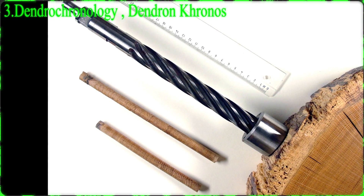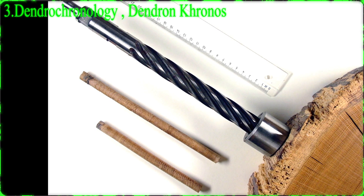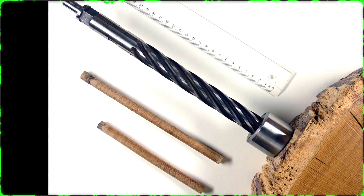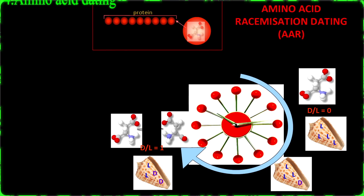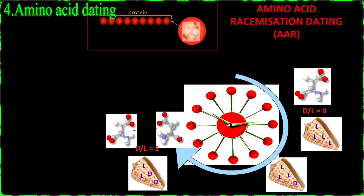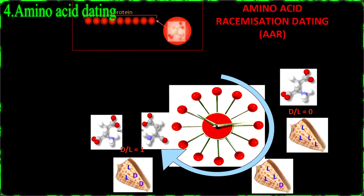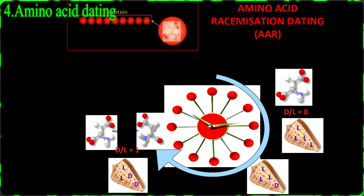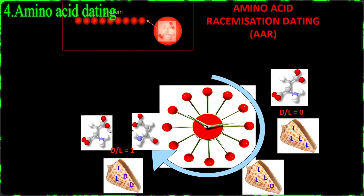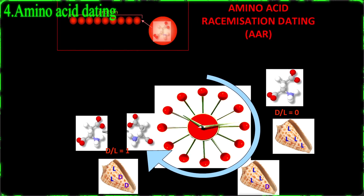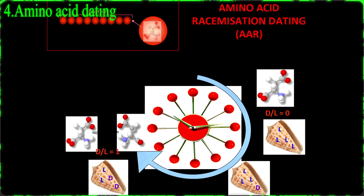Number 4: Amino Acid Dating. All biological tissues contain amino acids. This dating technique is used in a number of ways, but is utilized most recognizably in forensic science. All amino acids except glycine are optically active.